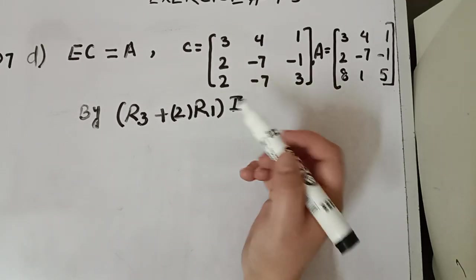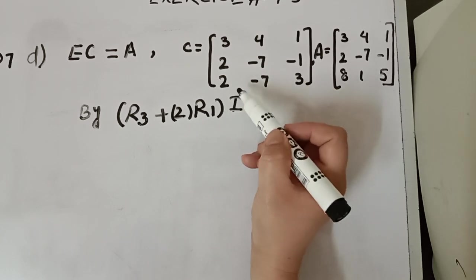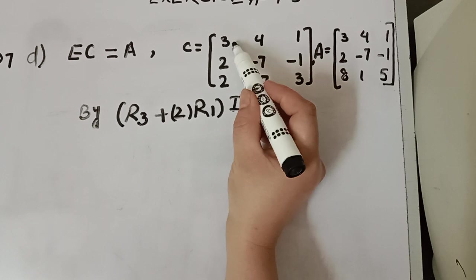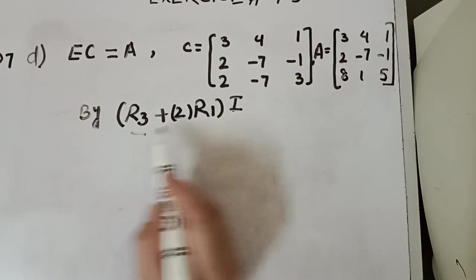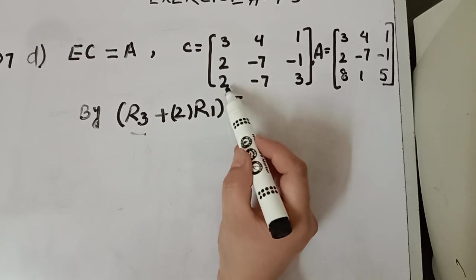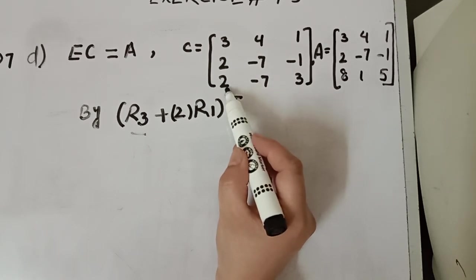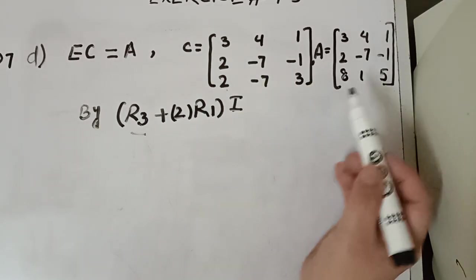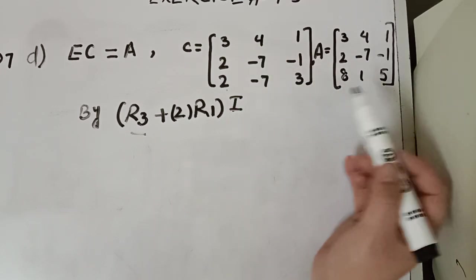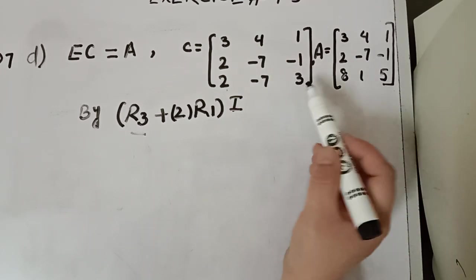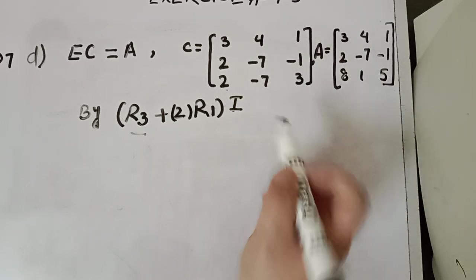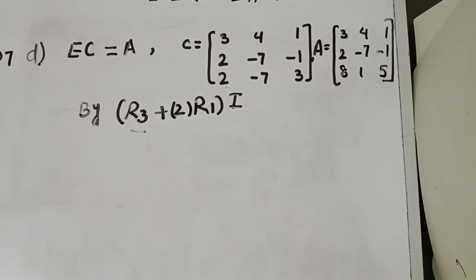Why did we perform this? In matrix C, R3 plus 2 times R1: 3 times 2 is 6, plus 2 gives 8. And 4 plus 2 times negative 7: that gives 1. And 3 plus 2 times row 1: 2 times 1 plus 3 gives 5. So we apply R3 plus 2R1 to the identity matrix of order 3.